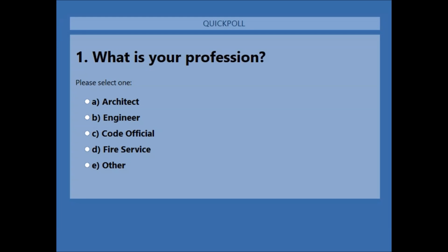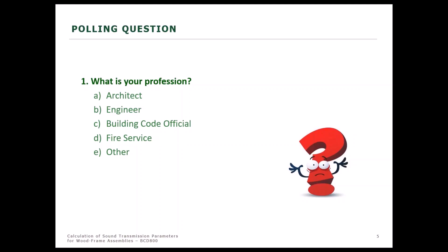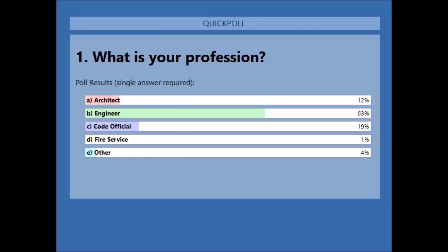What is your profession? Architect, engineer, code official, fire service, or other? It looks like we've got the majority of engineers — 63% — followed closely by code officials and architects.